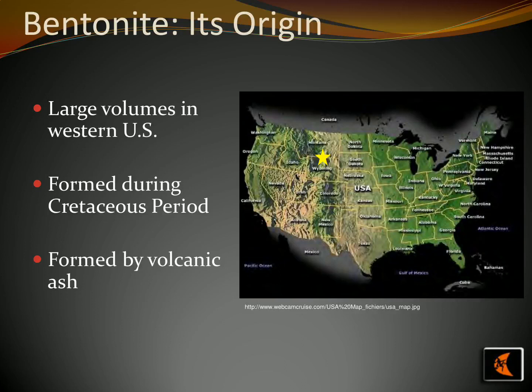Bentonite is a type of clay that originated from volcanic ash during the Cretaceous period, between 65 to 145 million years ago. It is mainly found in the western United States in large enough quantities to make it widely available. Its combination of minerals, water, and gases gives it the unique ability to absorb large amounts of water and expand up to 20 times its volume.